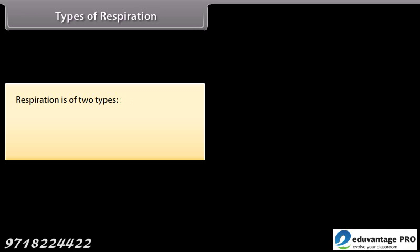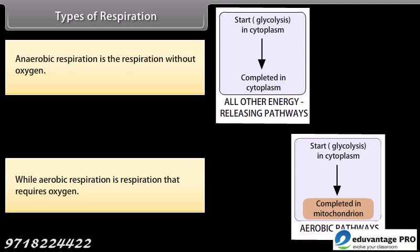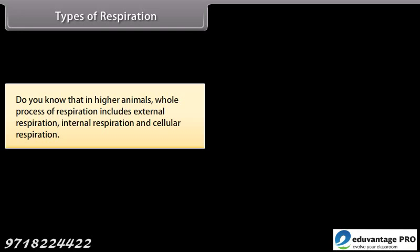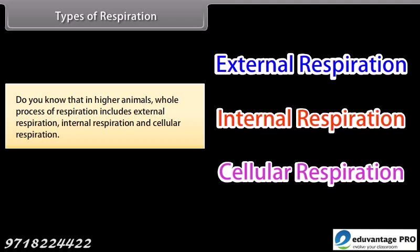Respiration is of two types: anaerobic respiration and aerobic respiration. Anaerobic respiration is respiration without oxygen, while aerobic respiration is respiration that requires oxygen. In higher animals, the whole process of respiration includes external respiration, internal respiration, and cellular respiration.